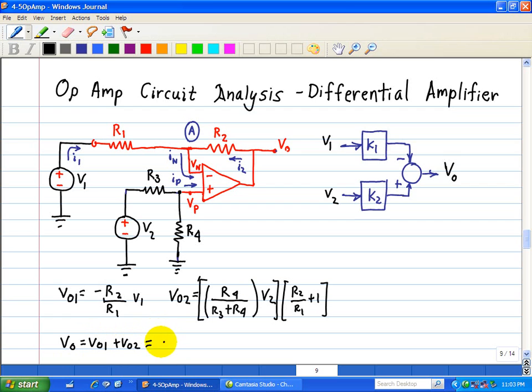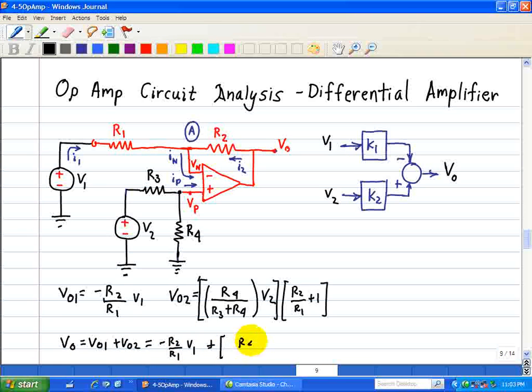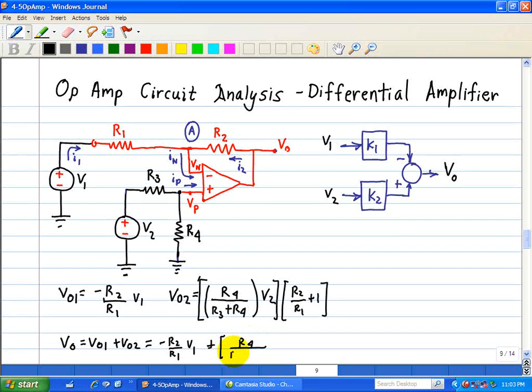Substituting, we have minus R2 over R1 times V1 plus R4 over R3 plus R4, times R2 over R1 plus 1, times V2.